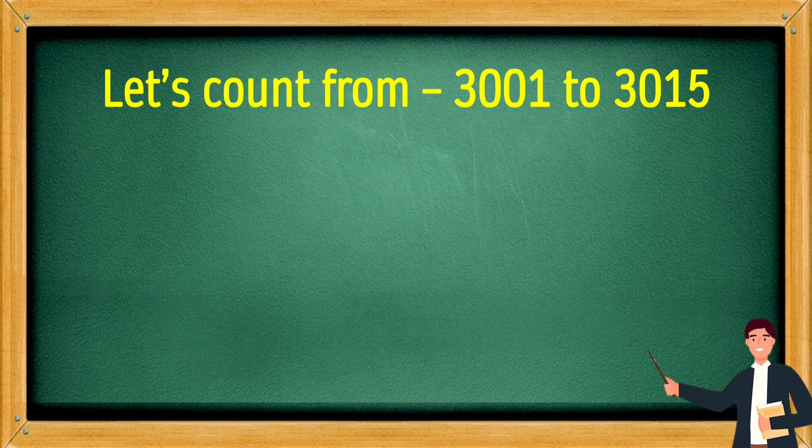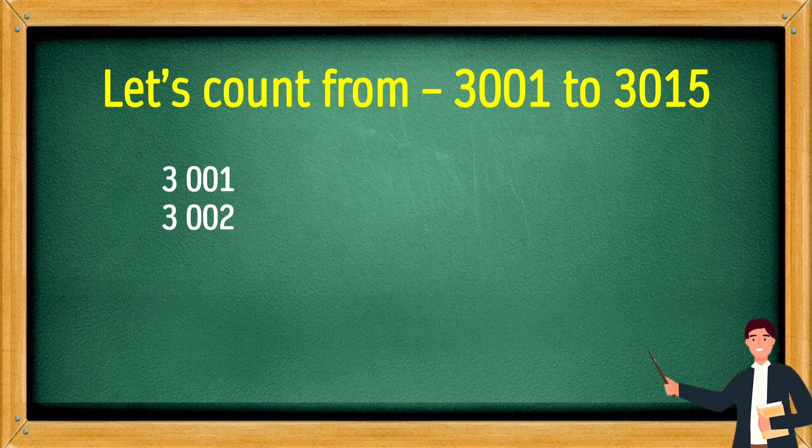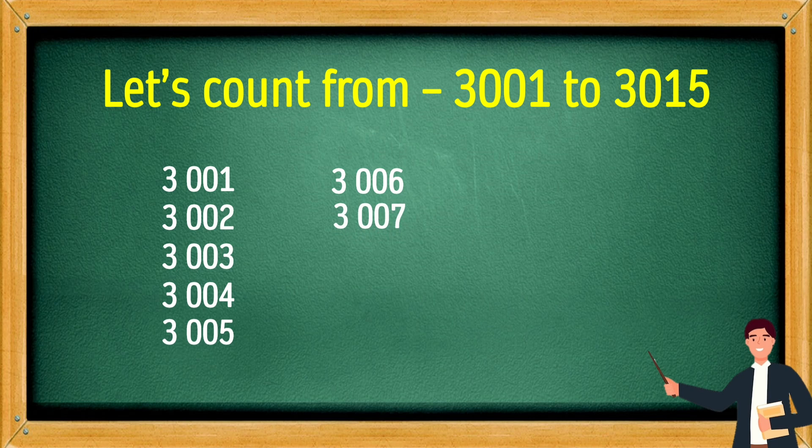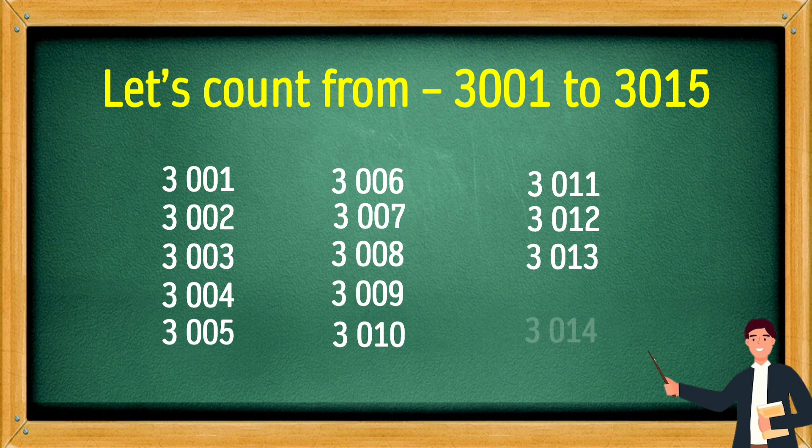Let's count from 3001 to 3015. 3001, 3002, 3003, 3004, 3005, 3006, 3007, 3008, 3009, 3010, 3011, 3012, 3013, 3014, 3015.